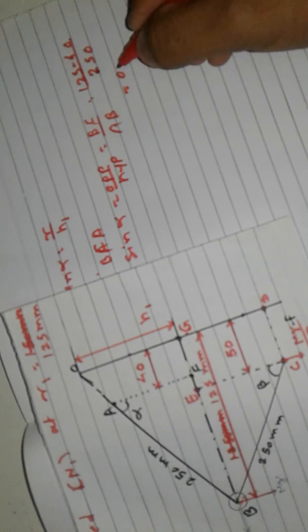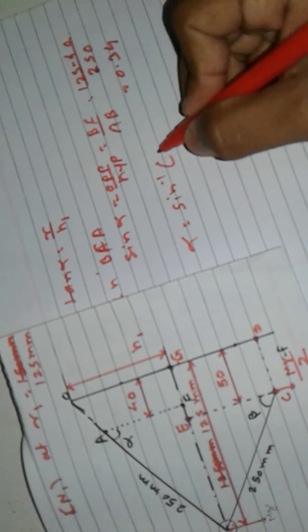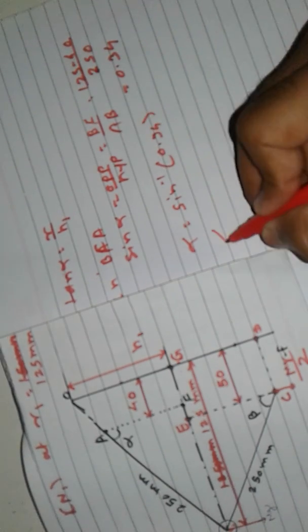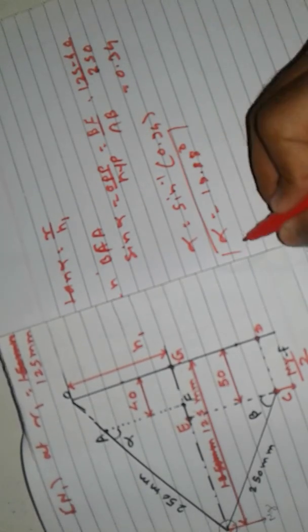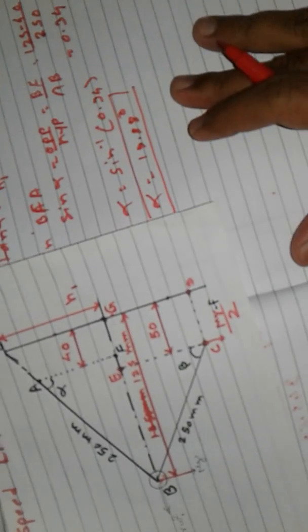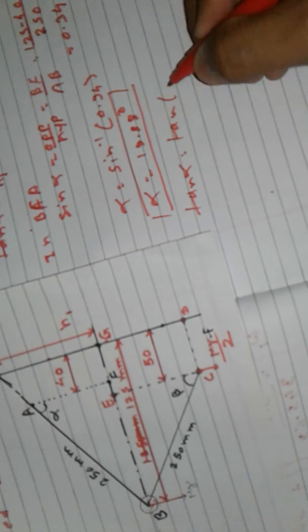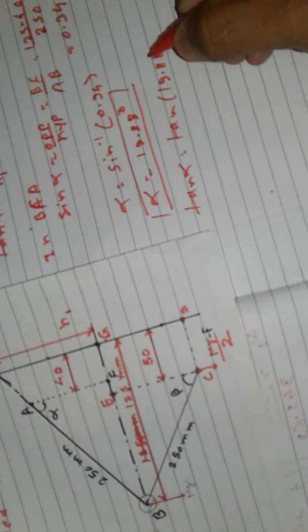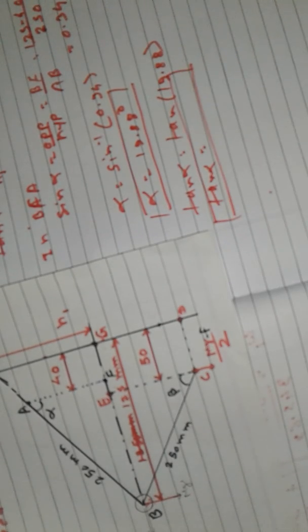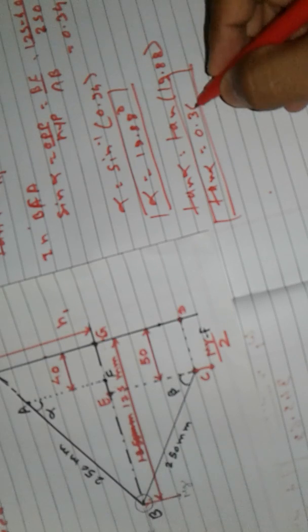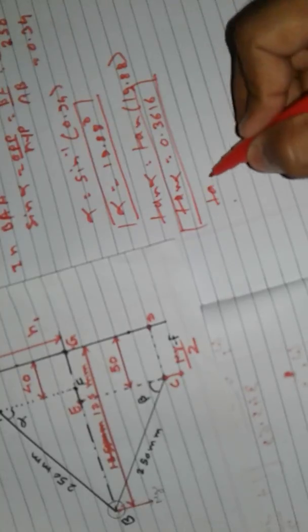We get sin alpha = 0.34, so alpha = sin⁻¹(0.34) = 19.88°. Now tan alpha = 0.3616.